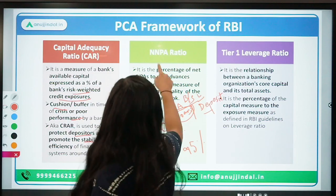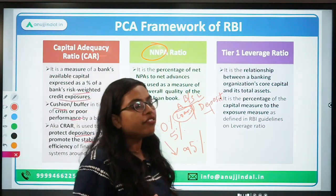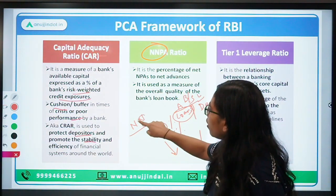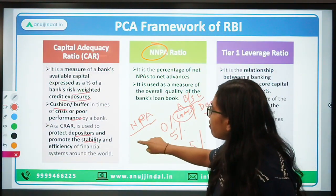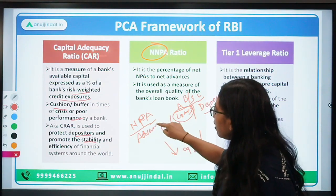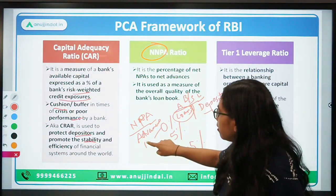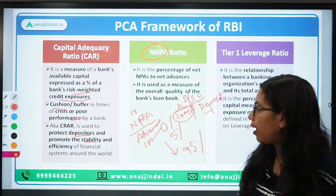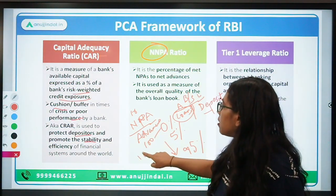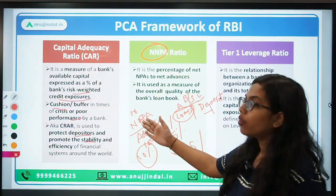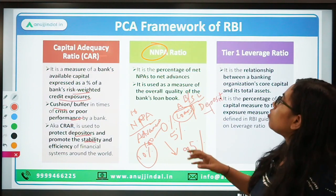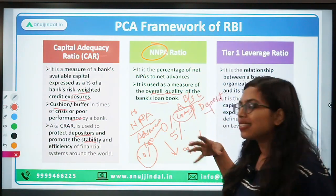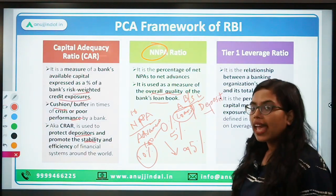The Net NPA Ratio is calculated as: total NPA divided by total advances (loans given). For example, if a bank has given loans of ₹100 crores and ₹10 crores are NPA — not coming back — that is a 10% NPA ratio, which is very high. This is used as a parameter and indicator to assess the quality of the bank's loan book — what is the quality of the bank's assets and loans.